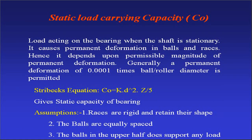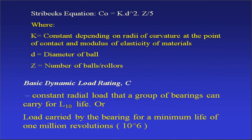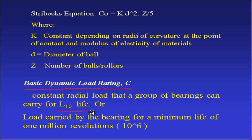After that, we discussed the static load carrying capacity of the bearing when it is stationary. Similarly, when the bearing is rotating, we define one more term: the basic dynamic load rating, denoted by the letter C. This is the constant radial load that a group of bearings can carry for L10 life — the rating life. Whatever constant radial load acts over the bearing during that life is called the basic dynamic load rating.